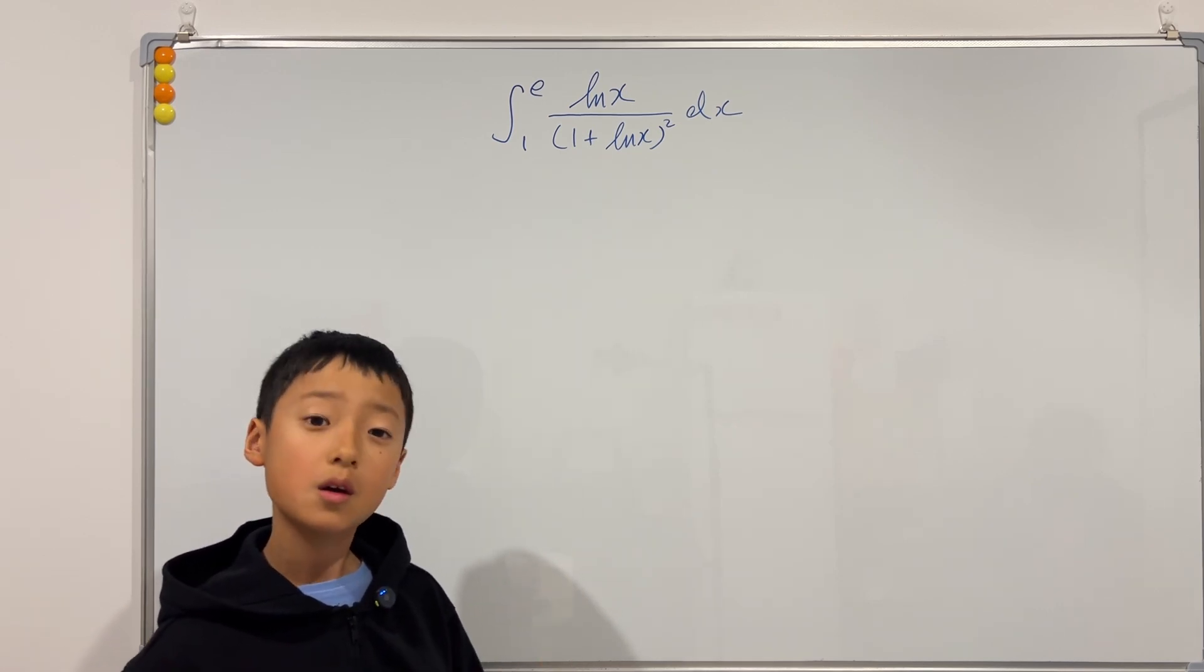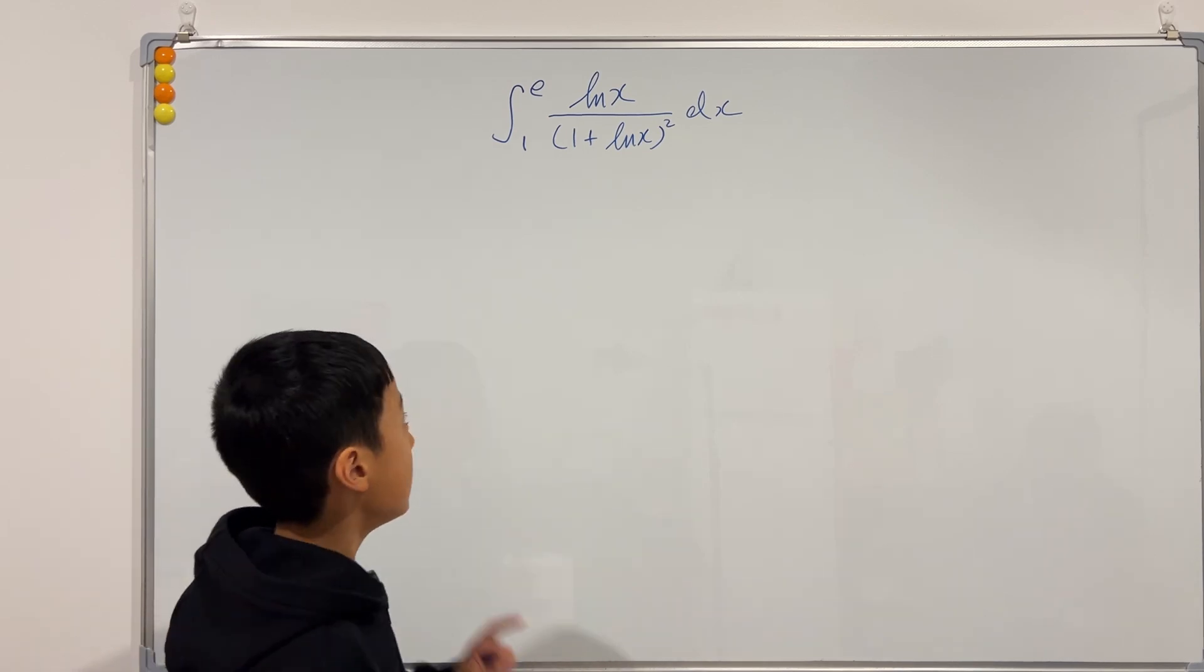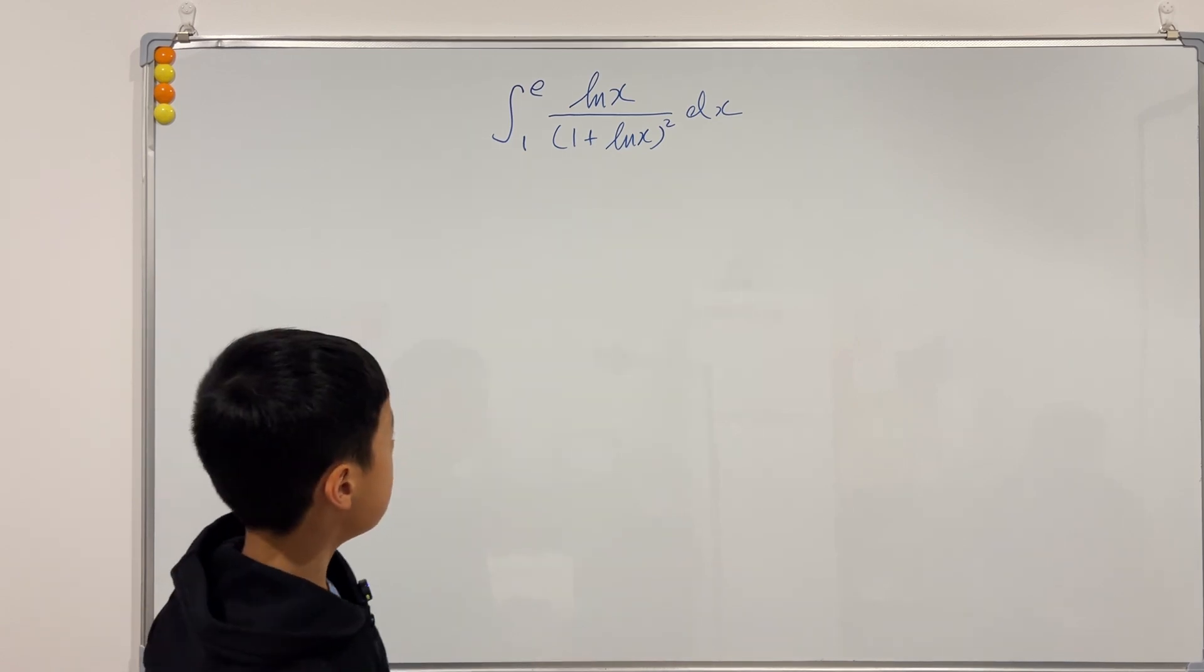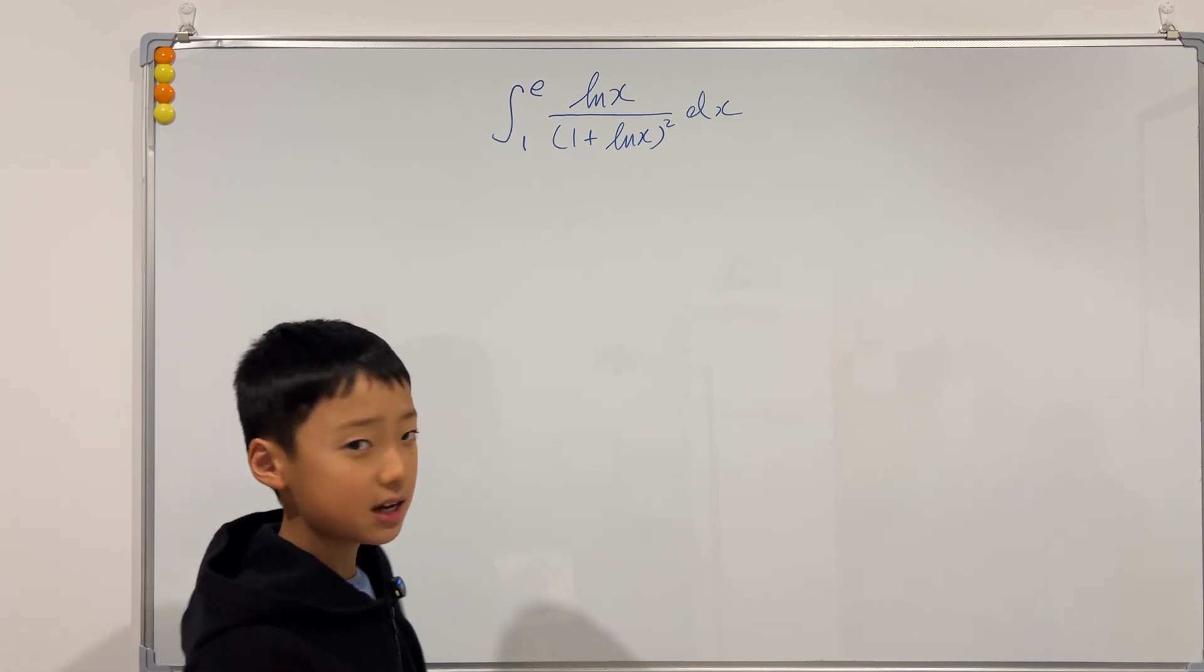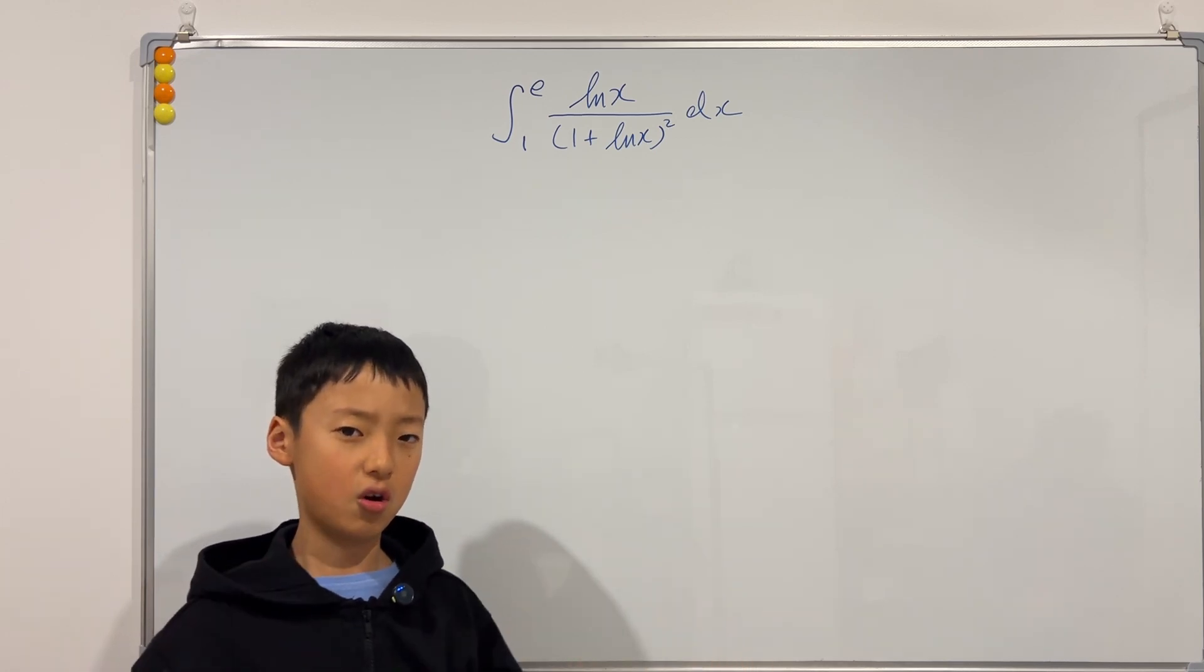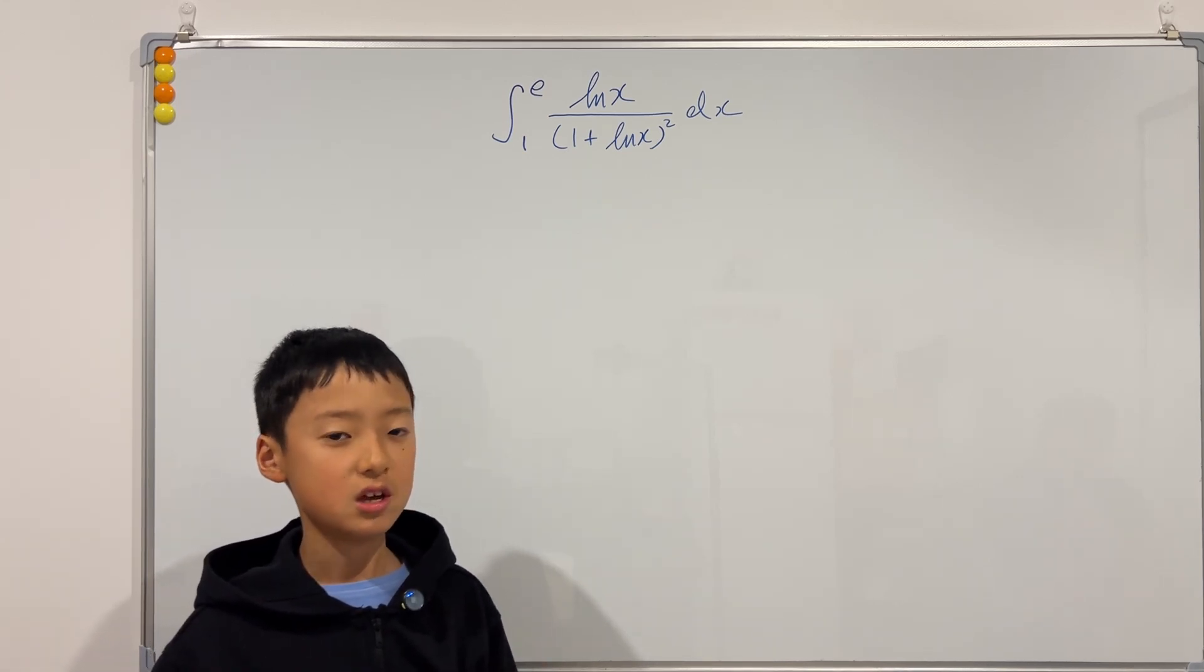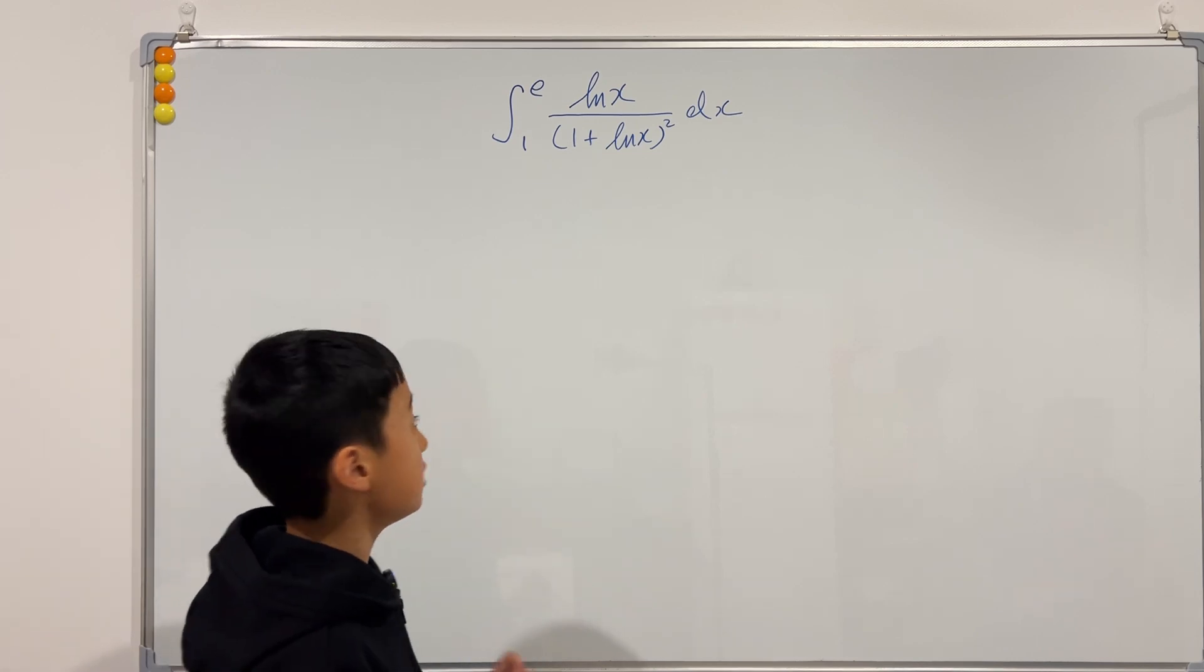But the substitution that does work is when we let u to be 1 plus ln of x. Now, the reason I would think of that is because usually when we try and solve integrals, we try and make the denominator simple and we try to make the numerator more complicated and long.